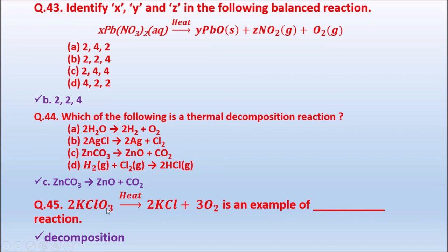Question 45: 2KClO₃ on heating gives 2KCl + 3O₂. This is an example of a decomposition reaction — potassium chlorate on heating gives potassium chloride and oxygen.